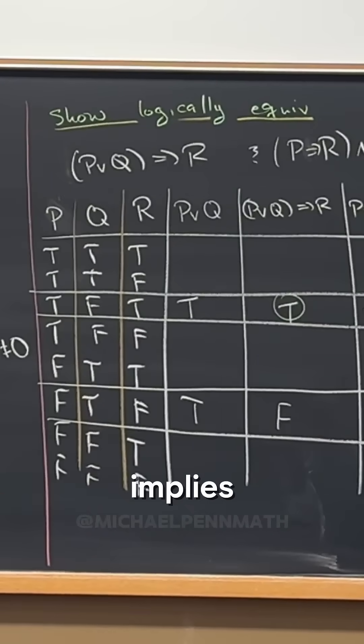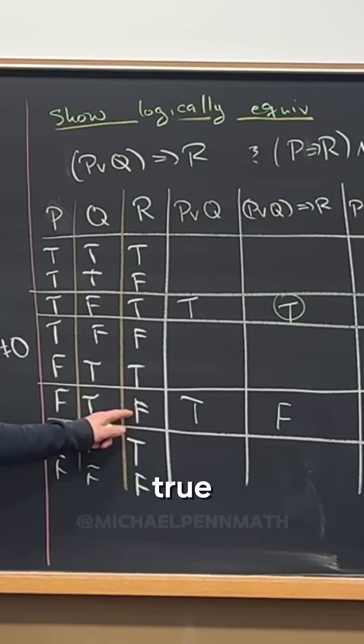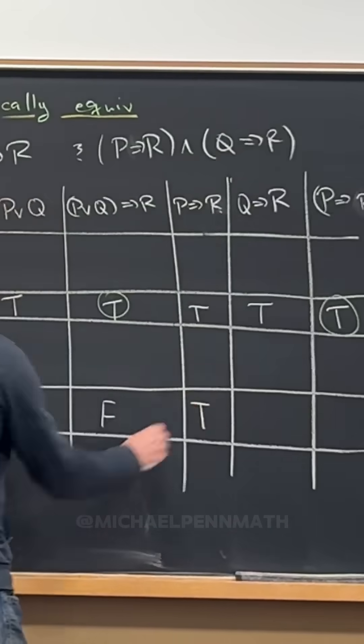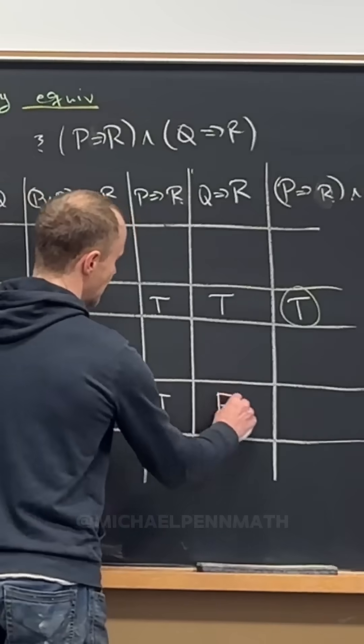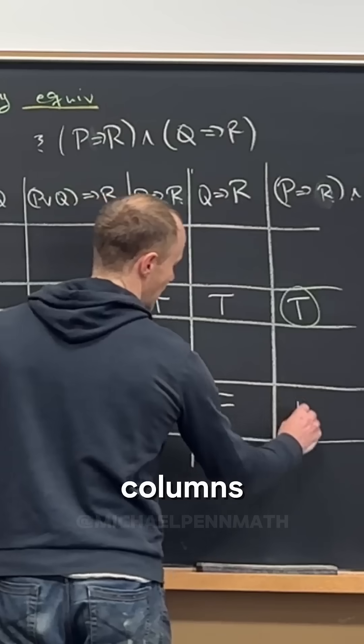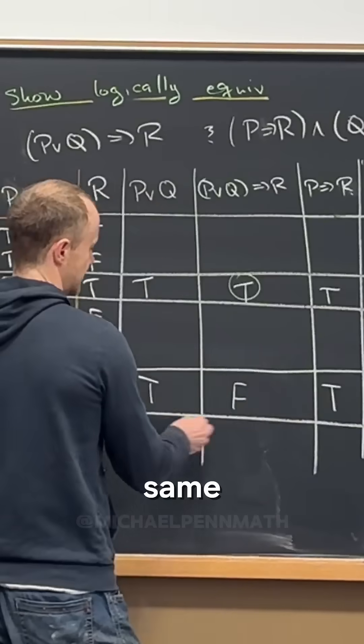Okay, then let's see. P implies R. So that's going to be false implies false, which is true, right? And then Q implies R. That's true implies false, which is false. And then and those two columns and you'll get a false. And now these are the same.